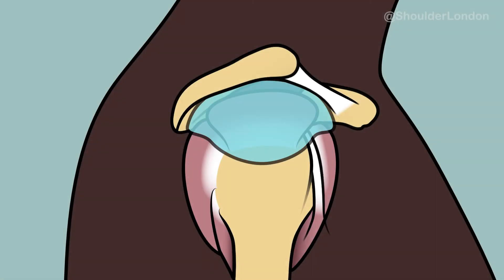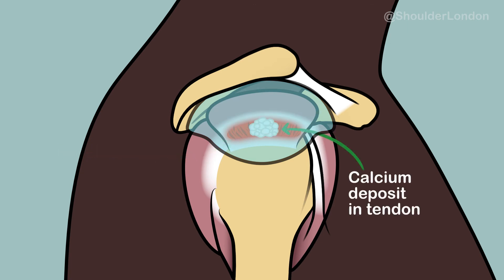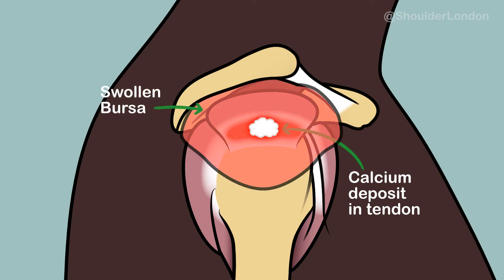Calcific tendonitis is a condition that occurs in tendinopathic tendons where calcium is deposited in the tendon. The calcium can go through a resting phase which is usually asymptomatic and patients are unaware that it is there. However, there can be a sudden onset trigger of inflammation as the body recognises the calcium is abnormal and tries to break it down and remove it from the tendon. The cells that try to remove the calcium release chemicals that cause inflammation in the tendon and bursa above.